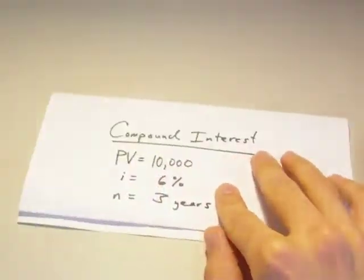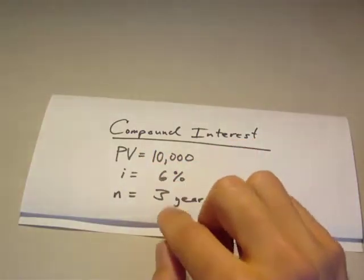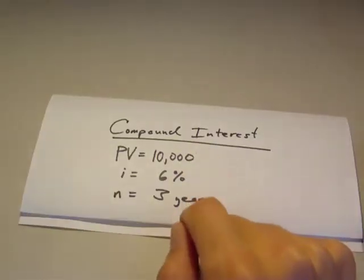Let's focus on compound interest. So we've got a present value of $10,000, interest rate of 6%. And we've got three years. We want to know how much we'll have in our account with this compounding interest.